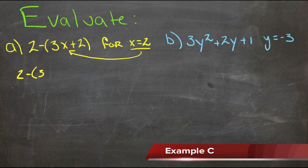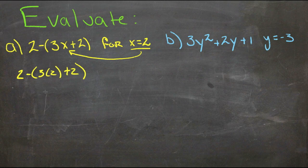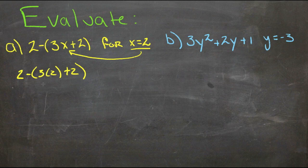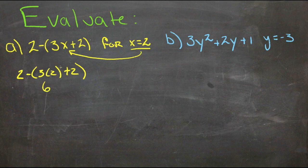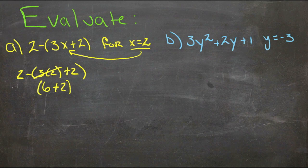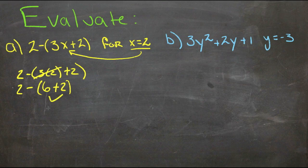So we do parentheses first and within the parentheses multiplication first. So 3 times 2, that's 6. 6 plus 2 remains in parentheses, and 2 minus that quantity, 6 plus 2 is 8. So now we have 2 minus 8, and 2 minus 8 is negative 6.